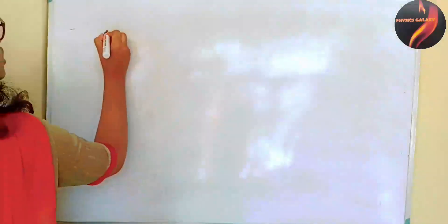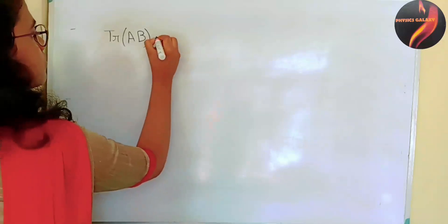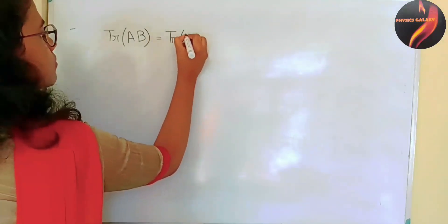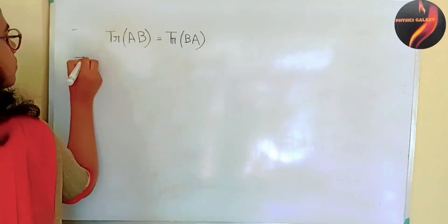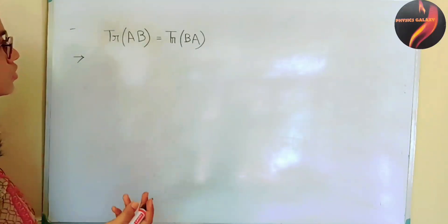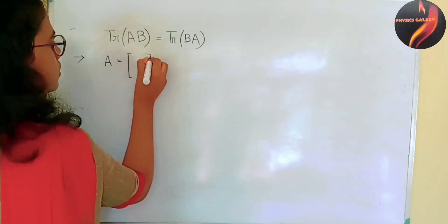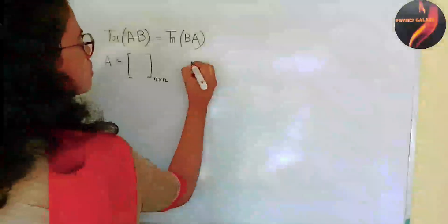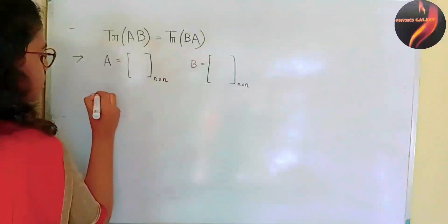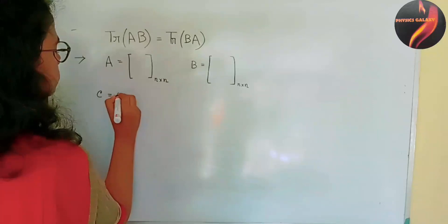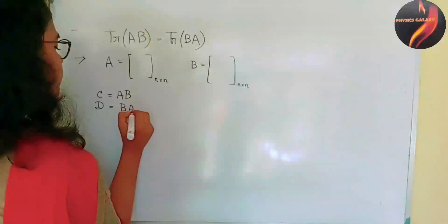Then they asked me to show that trace(AB) equals trace(BA), where A and B are both square matrices. Suppose A is an n-by-n order matrix and B is also an n-by-n order matrix. Let C equal AB and D equal BA.